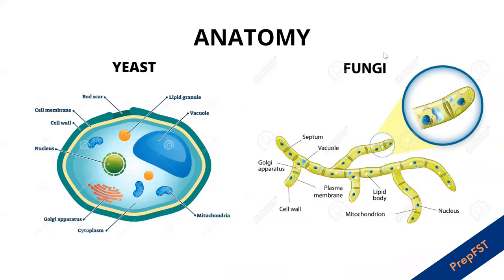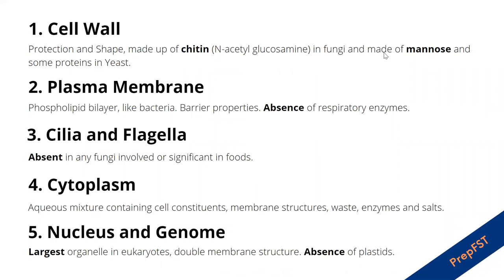The basic structures in both yeast and fungi include: first, the cell wall, which gives protection and shape — importantly it is made up of chitin, which is N-acetyl glucosamine only; in yeast, the cell wall is made up of the sugar mannose and some proteins. Second, the plasma membrane — a phospholipid bilayer with barrier properties. Importantly, the plasma membrane of eukaryotes lacks respiratory enzymes, because unlike prokaryotes they have a specialized structure known as mitochondria to carry out respiratory activities. Third, cilia and flagella are absent in fungi.